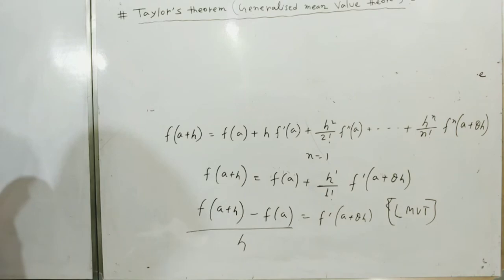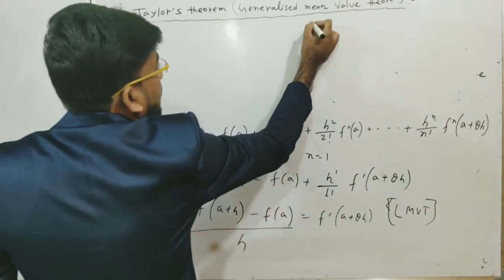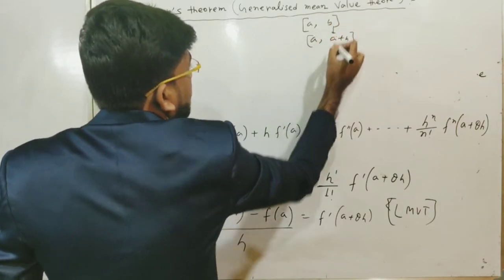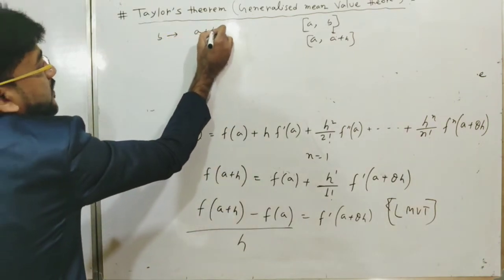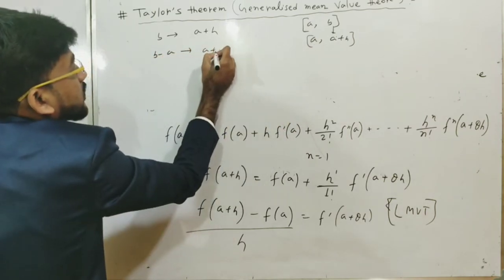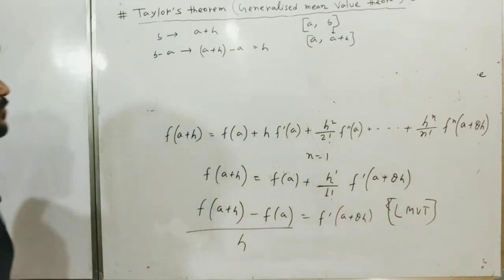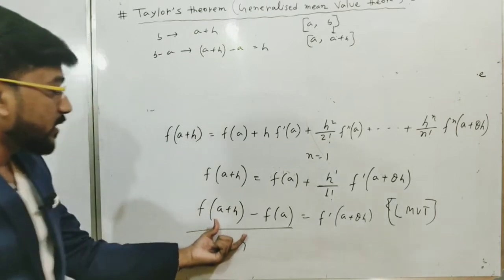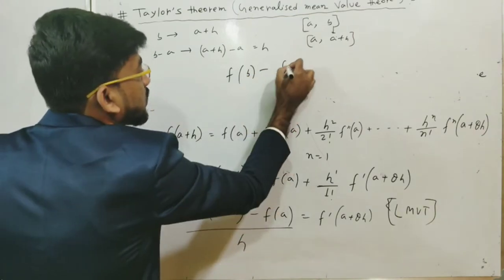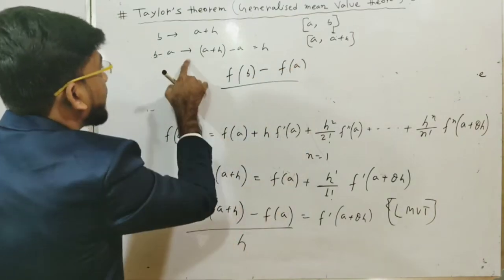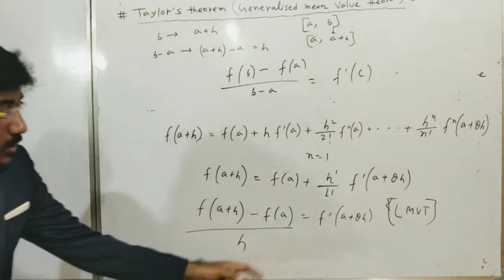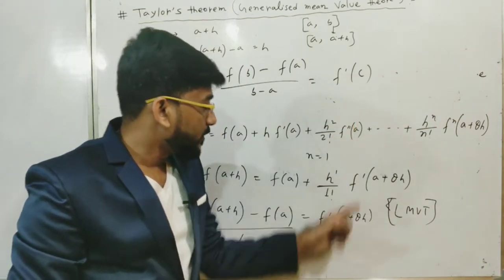In the conventional form, the interval is [a, b], whereas here the interval is [a, a+h], so b is replaced by a+h. Therefore b − a = (a+h) − a = h. So f(b) − f(a) divided by (b−a) equals f′(c). Here we have f′(a+θh), so c is obviously a+θh, since c must satisfy a < c < b.